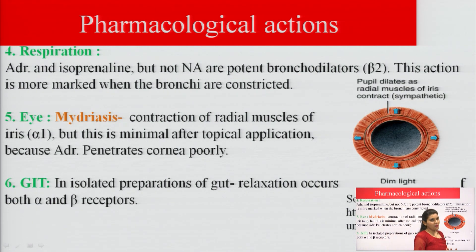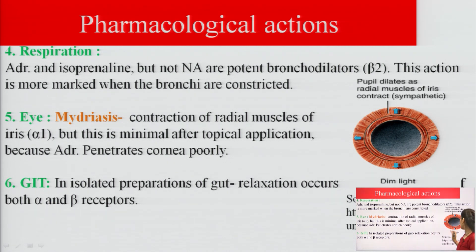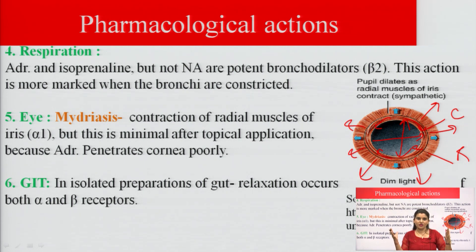Adrenaline and isoprenaline, but not noradrenaline, are potent bronchodilators. On the eye, adrenaline causes contraction of radial muscles of the iris, resulting in mydriasis (pupil dilation), though this effect is minimal after topical application because adrenaline penetrates the cornea poorly. If circular muscles contract, the result is miosis; if radial muscles contract, the result is mydriasis.